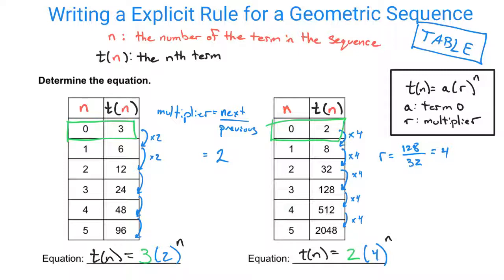It's nice to visualize how the change is going down your table, paying close attention that your n values are going up by 1. Term 0 is what we use to help us find that part of the explicit rule. So pay attention to this general rule here: t of n equals a times r to the n, where a is term 0, r is your multiplier given by next over previous, and you should be able to write your explicit rule every single time.